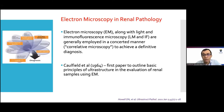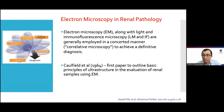Electron microscopy in renal pathology is not something new. It has been used alongside light microscopy and immunofluorescence in a concerted manner — what is called correlative microscopy — to achieve a definitive diagnosis. Coffield, back in 1964, published the first paper outlining the basic principles of ultrastructural evaluation of renal biopsy using electron microscopy. Publications by Prof. Louis from the 1980s and 1990s give an overview of the pattern of renal disease in Malaysia, and even back then, electron microscopy was used to assist diagnosis in many renal conditions.